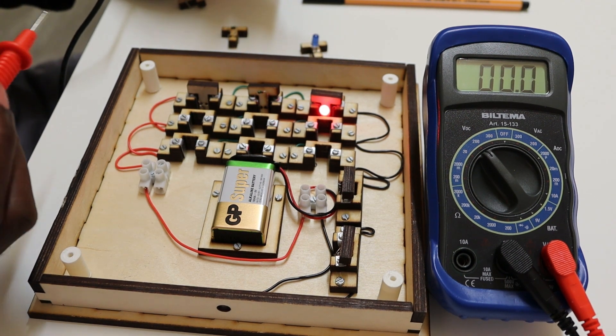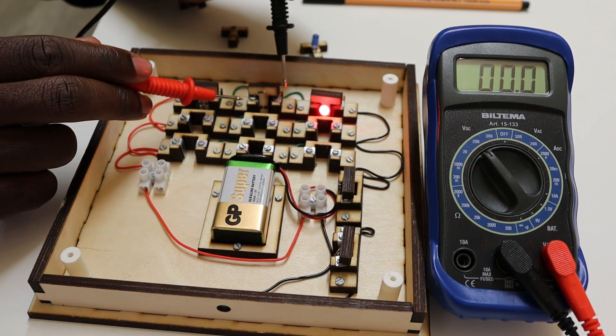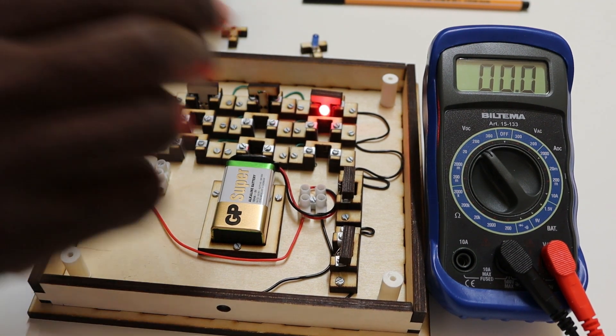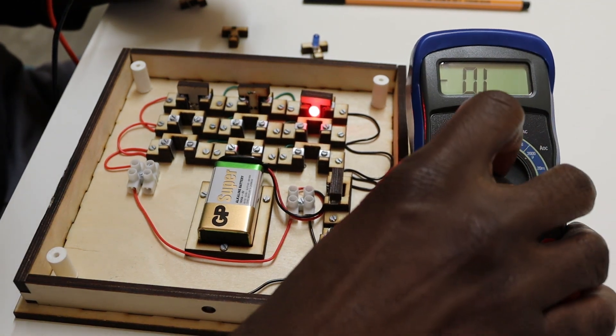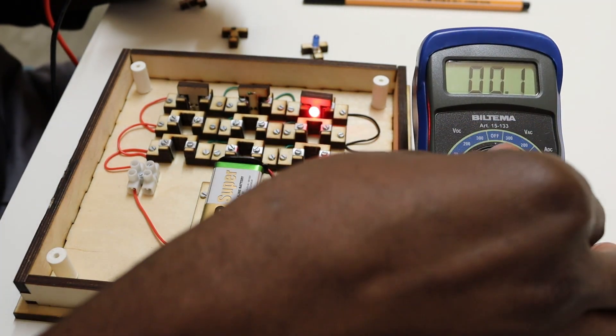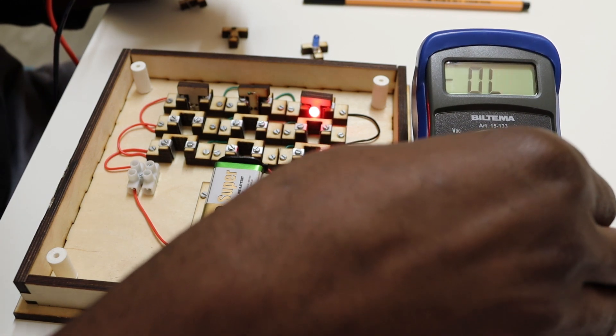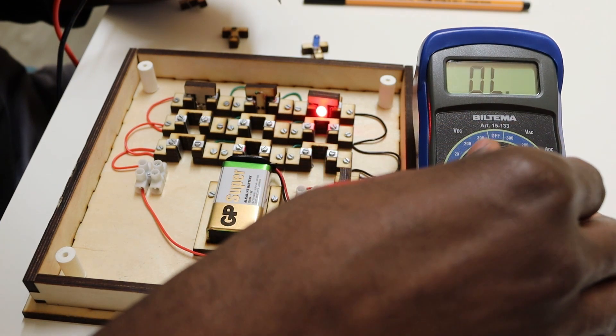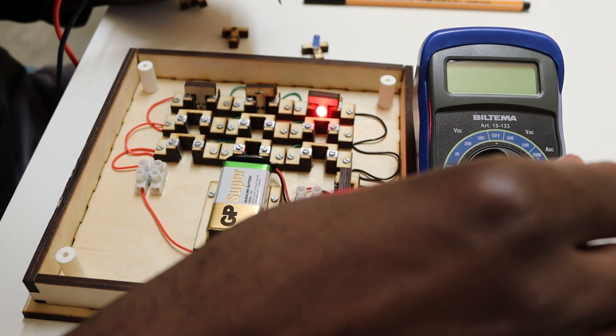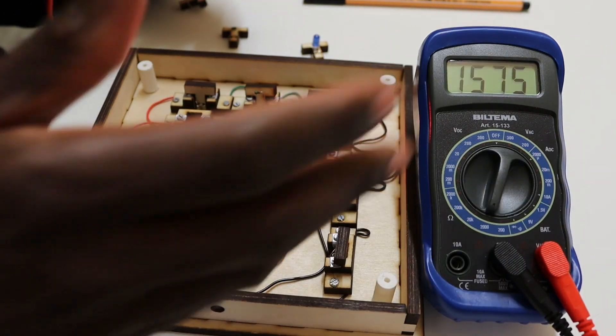Can we measure current, or can we check the value of resistance that we have here? Yeah, we can check resistance. Let's check resistance first and then finally check the current. Let's check the resistance, so we put this to 200k. Let's put it there.